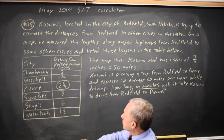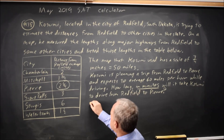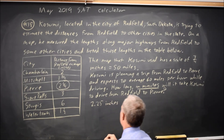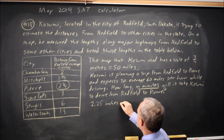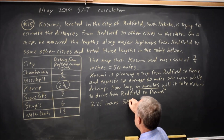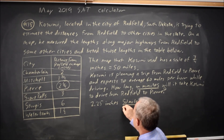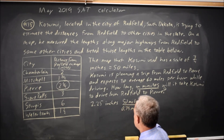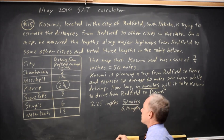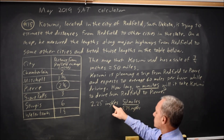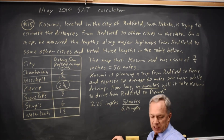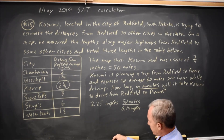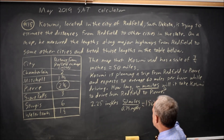I need to convert from inches on the map to miles. So 2.25 inches — I can set this up as a proportion, or just multiply by 50 miles, which equals 50 miles over land equals 0.75 inches on the map. The inches cancel, so I know I've written this proportion correctly because the units I wanted to get rid of have canceled. And I have 2.25 times 50 over 0.75, which is 150 miles.